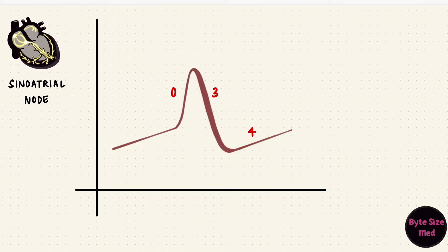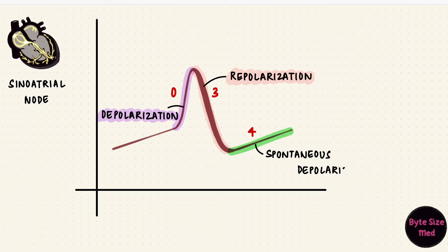So phase zero is depolarization, phase three is repolarization, and phase four is spontaneous depolarization. Those are the phases of an action potential that gets generated in the sinoatrial node.